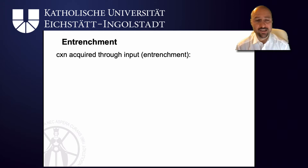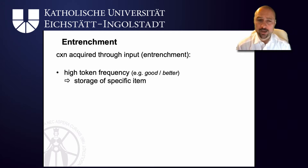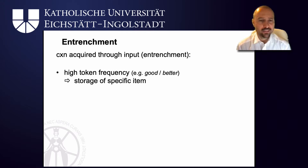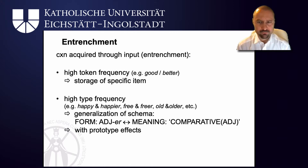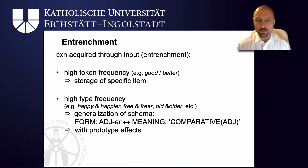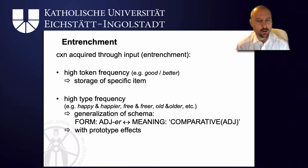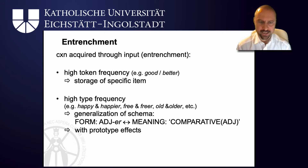For language acquisition, we already said that entrenchment — the mental storage of a construction in long-term memory — is crucially affected by input. That includes high token frequency: if one specific element like 'better' is used very often, then you store that specific substantive item. Or, because of pattern detection, if you have a pattern such as happy, happier, free, freer, old, older, you will know that a property is denoted by an adjective, and that the comparative can be licensed by a schema in which you add a schwa at the end in British English.